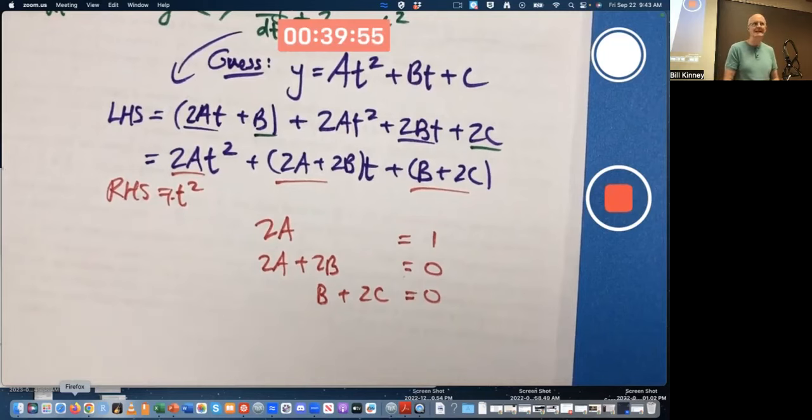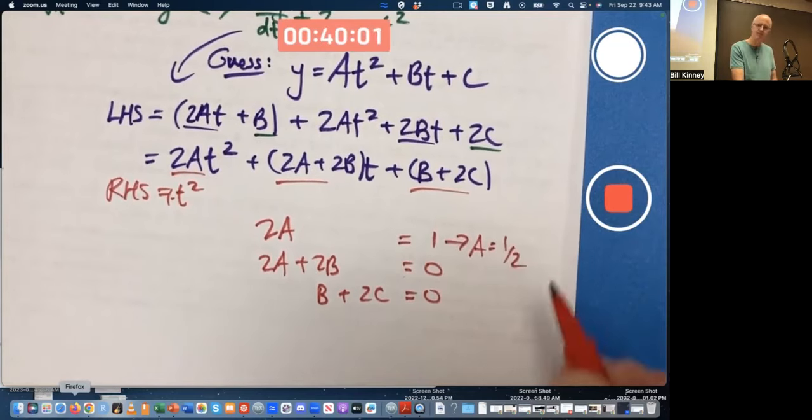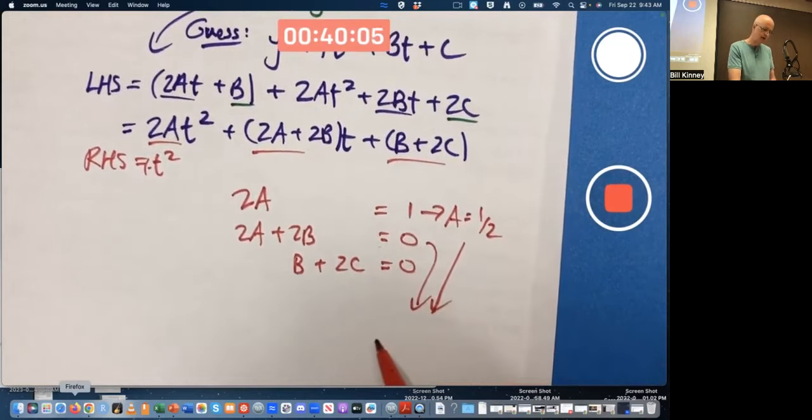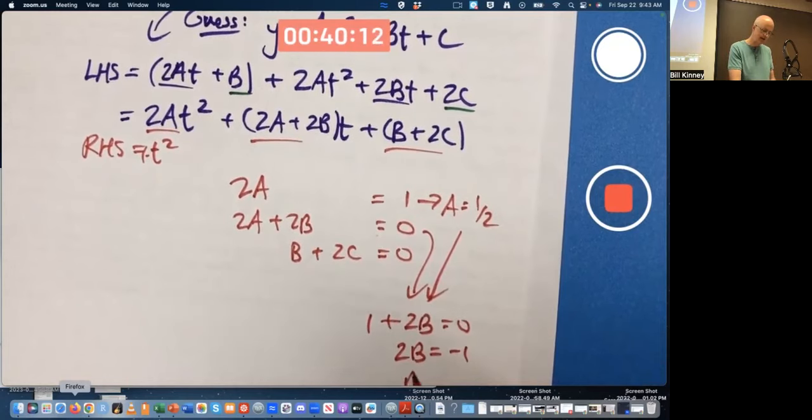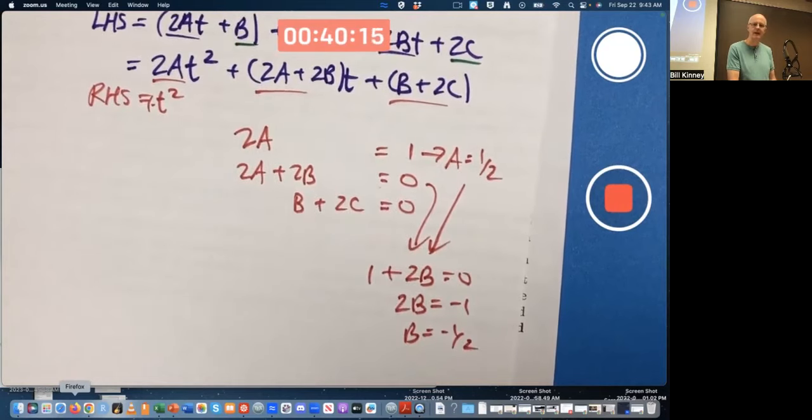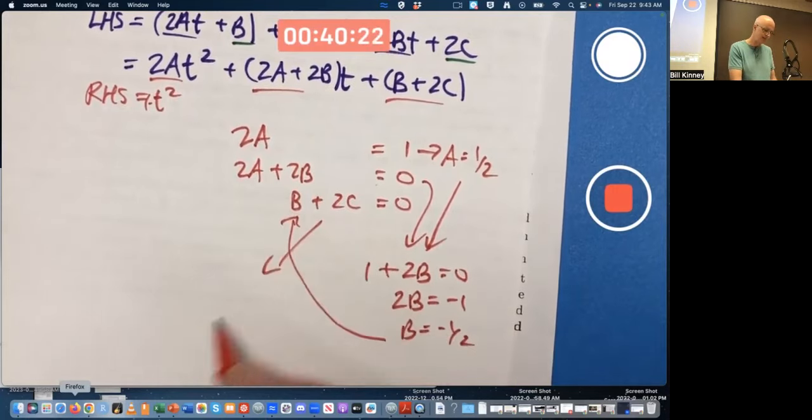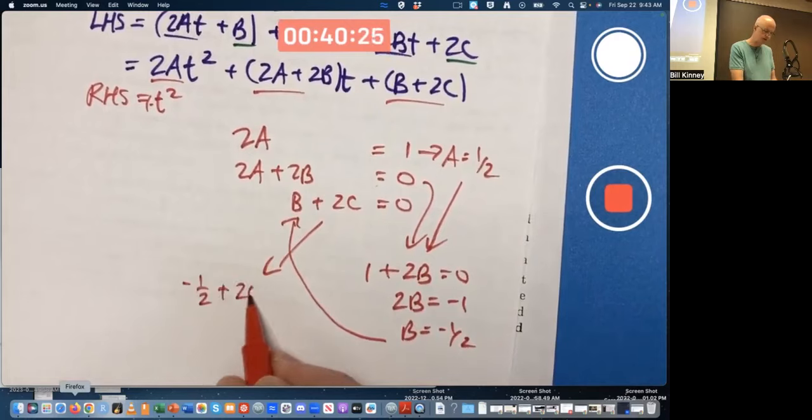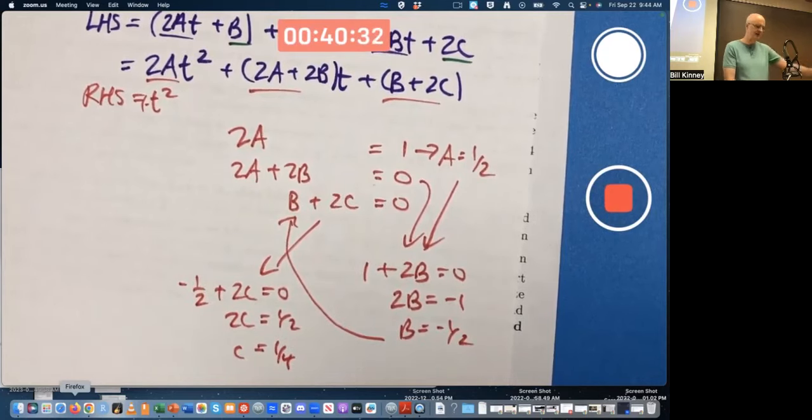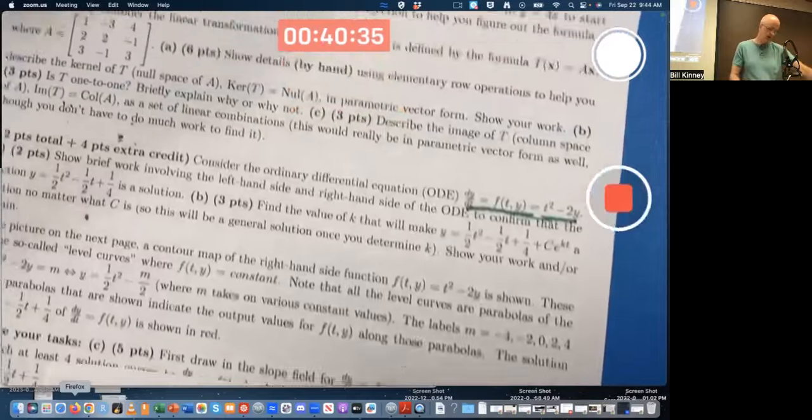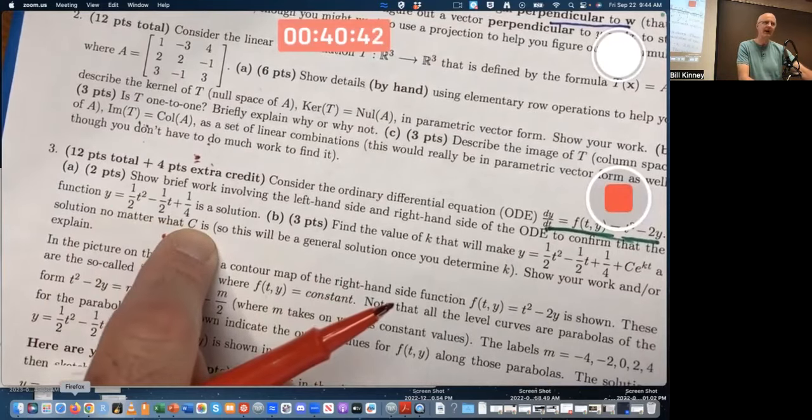You could put it in a matrix. You could do row operations, but it's actually easier just to solve it as it is. That implies a is 1 half. Then I can plug that into the second equation and get 2a is 1 plus 2b is 0. So, 2b is negative 1, and b is negative 1 half. And then plug that into here. And get negative 1 half plus 2c is 0. So, 2c is 1 half, and c is 1 fourth. a is 1 half, b is negative 1 half, c is 1 fourth. Lo and behold, a is 1 half, b is negative 1 half, c is 1 fourth. That's how I figured this function out.